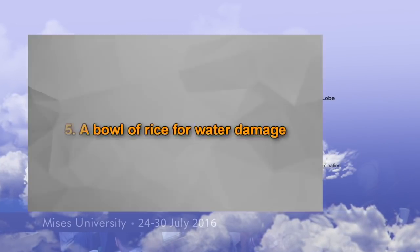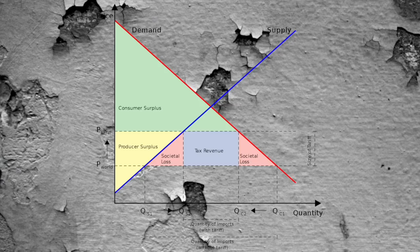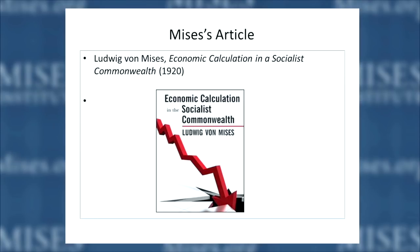I want to start by bringing to your attention a very important article, probably the most important economics article written in the 20th century. That's the article by Ludwig von Mises, which appeared in 1920 in German — it wasn't translated until 1934 into English — and it's called Economic Calculation in the Socialist Commonwealth. So the second critique would bring in Ludwig von Mises' opposition to socialism.